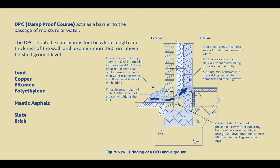The associated reading starts with a discussion of the damp proof course. The damp proof course is a very important element that needs to be understood as it acts as a barrier to the passage of moisture into the building. There are specific requirements for how a DPC should be applied, and this is important to understand both in terms of the details provided in the text as well as the diagram provided in the reading.